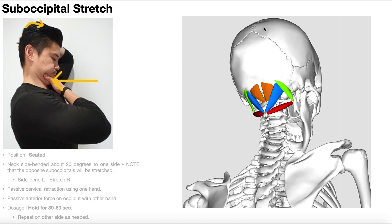This is a stretch for the suboccipital muscle group. Remember that these muscles are some tiny postural endurance muscles at the back of the cervical spine, or the upper neck, right at the base of the skull, also called the occiput.